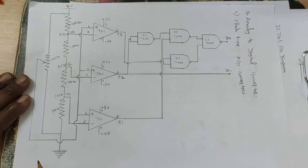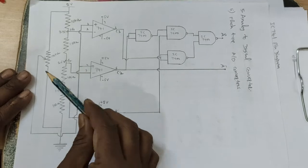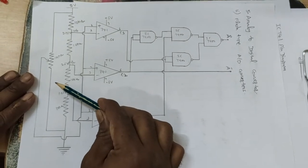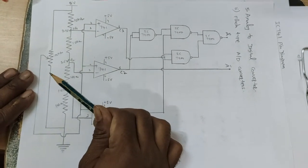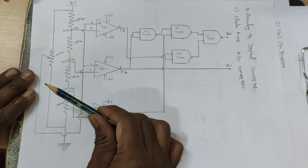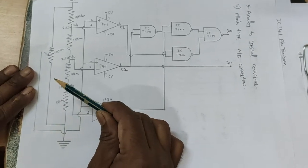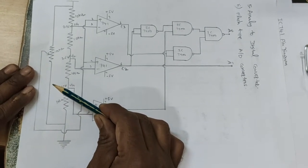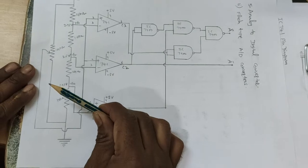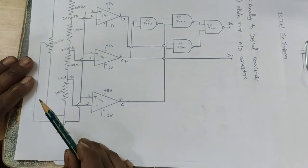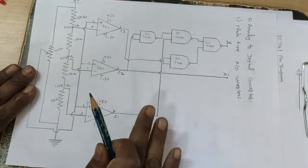Here the analog input is using a potentiometer. You can vary the analog input voltage from 0 to 5 volts. And this is the circuit diagram.